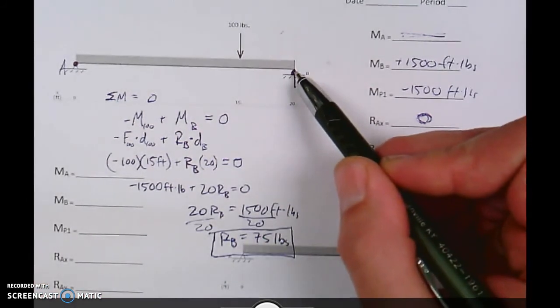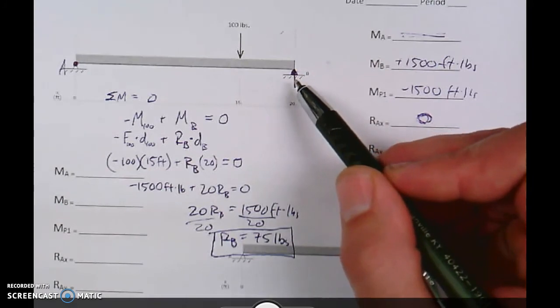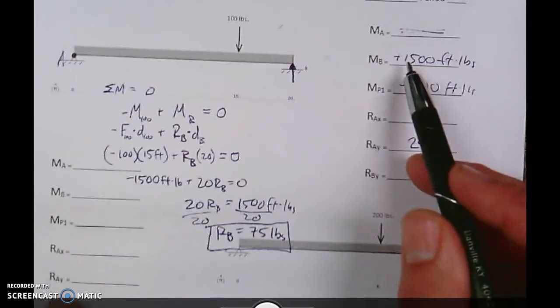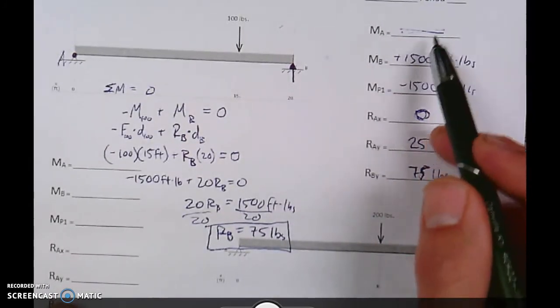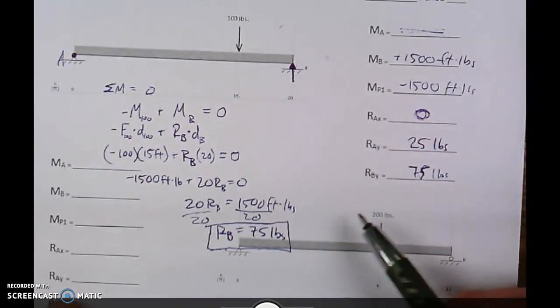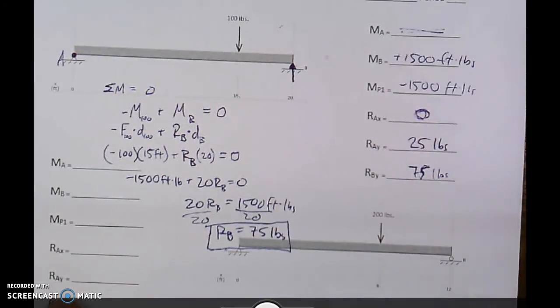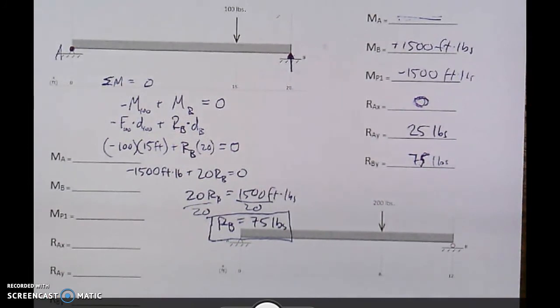Now, if we had chosen B as our point of rotation, which we could have, and it would have worked fine, we'd have no moment at B, and we would have a moment at A. So, that's an example for the first one. You try the other two. Good luck, and we'll check in tomorrow.